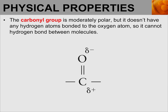Both aldehydes and ketones have a carbonyl group where the carbon is double bonded to an oxygen. The carbonyl group is moderately polar, and this is due to the fact that oxygen is more electronegative than carbon. It draws those shared electrons towards itself, so carbon won't have equal ownership of those electrons. This leaves oxygen partially negatively charged and carbon partially positively charged.